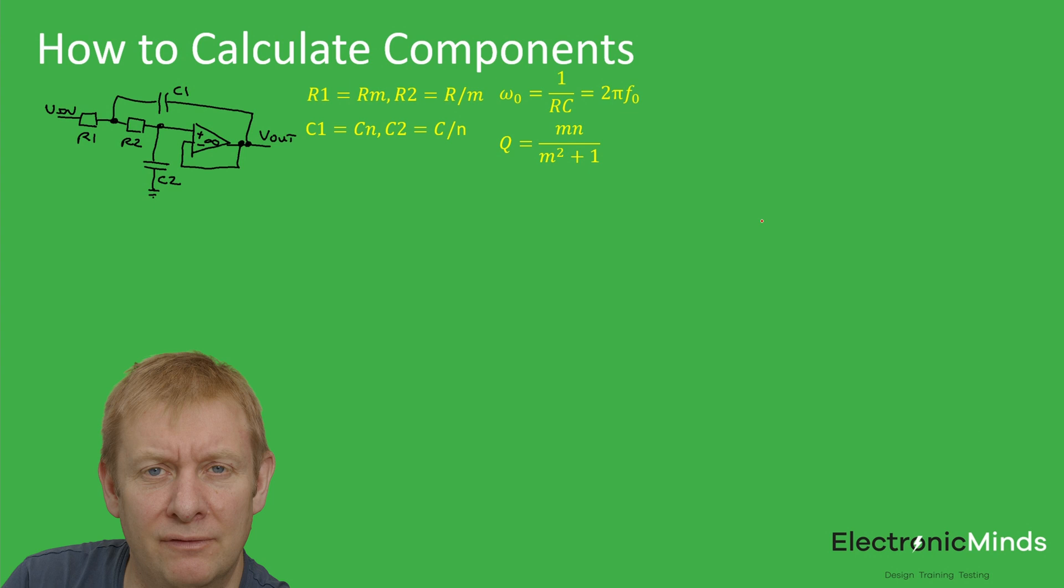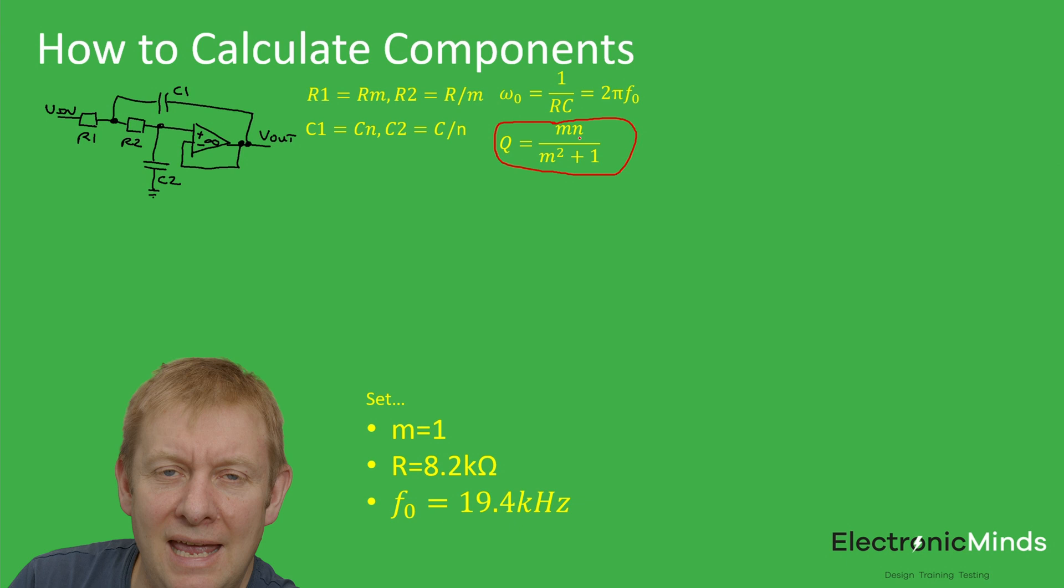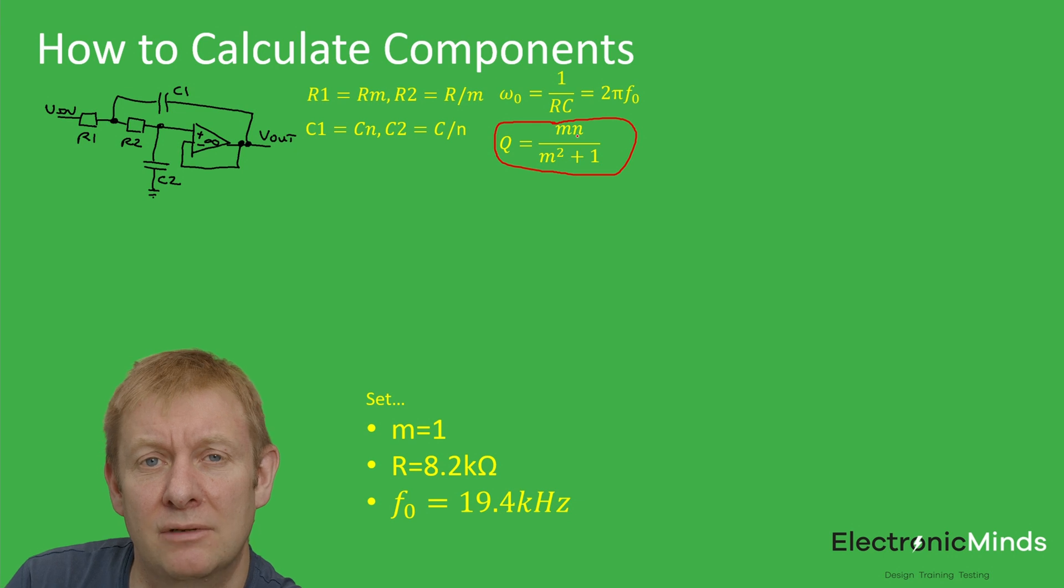We now have a methodology to help us design our filter. I'd like to use this to come up with a few different filter characteristics. First, we'll set some assumptions. We're going to set the value of m, the ratio between the resistors, to unity. Then our equation for Q becomes just a function of n, so we can independently control the Q with that one parameter.